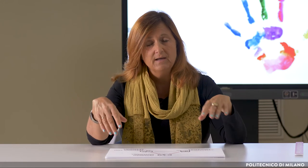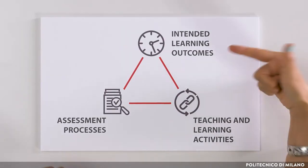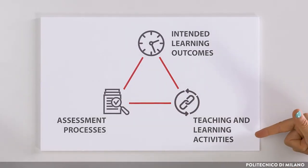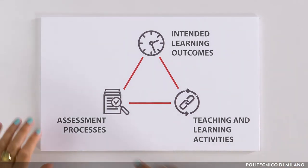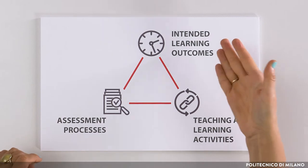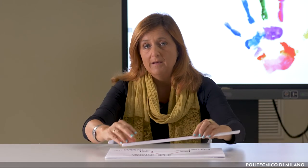What does Biggs' Triangle tell us? It tells us that the prerequisite for effective teaching is that there is a correct logical alignment among the intended learning outcomes, the teaching and learning activities, and the assessment process that allows us to observe if the intended learning outcomes have been met. Biggs defined this process as constructive alignment.